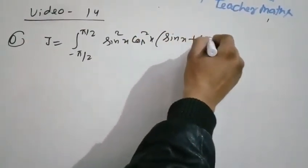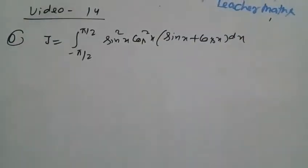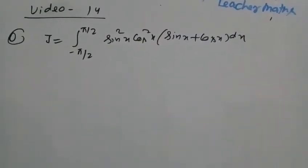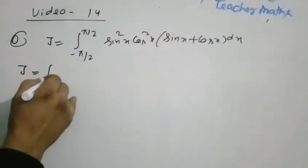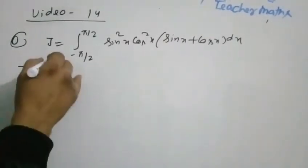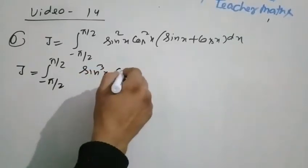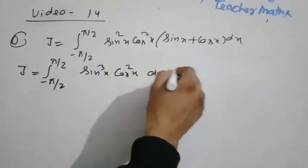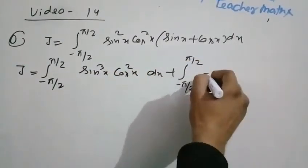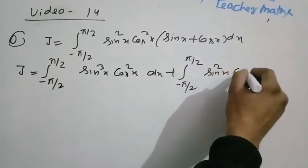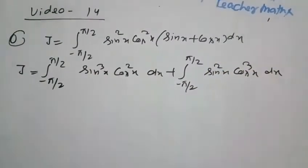The full integral is I equal to integration from minus pi by 2 to pi by 2 of sin squared x cos squared x times (sin x plus cos x) dx. Multiplying out, this gives two parts: integration of sin cube x cos squared x dx plus integration of sin squared x cos cube x dx.